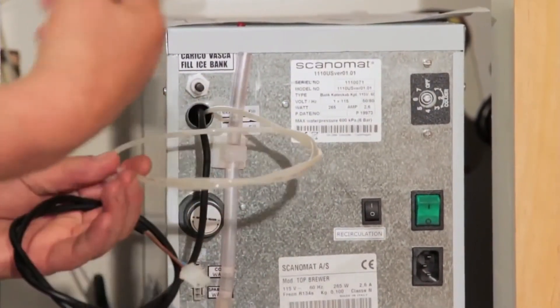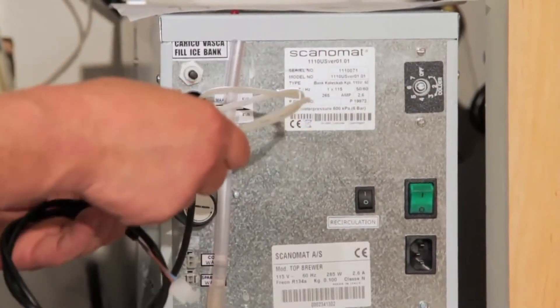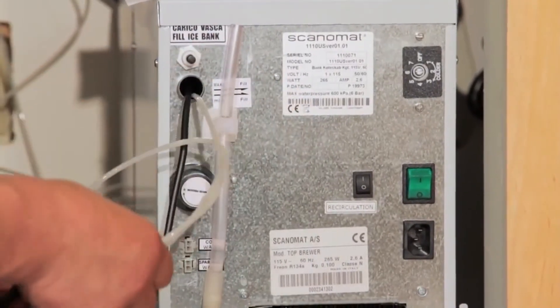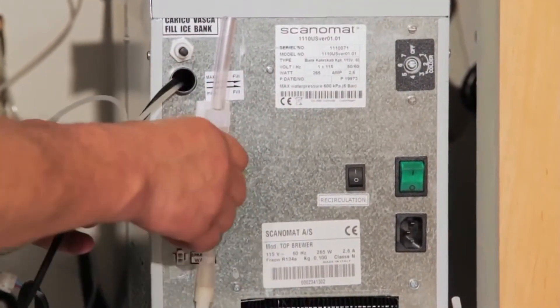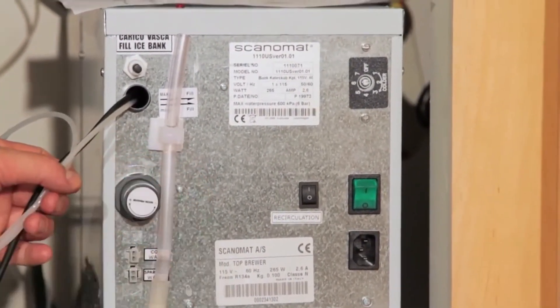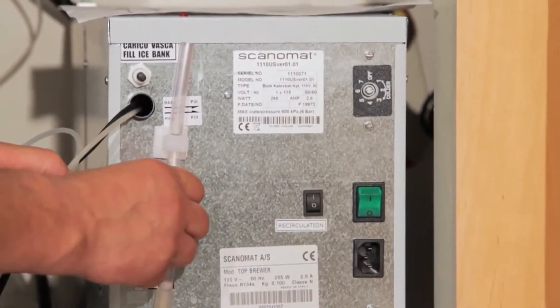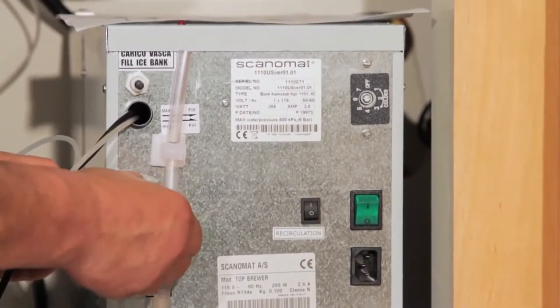This is also a flush line that goes in and flushes the milk every time you have a milk drink. You want to flush the line. You also have a flow meter which, if you want to change or increase the volume of water, you can make that adjustment here.